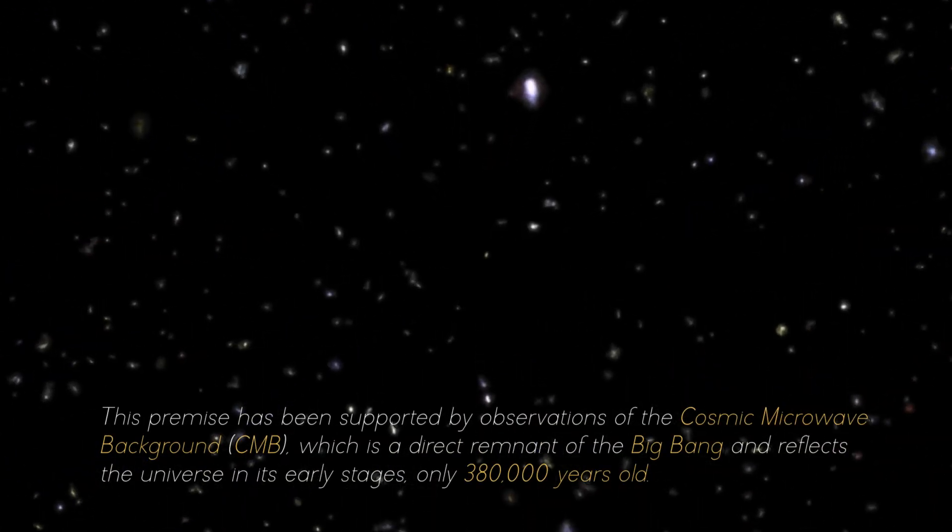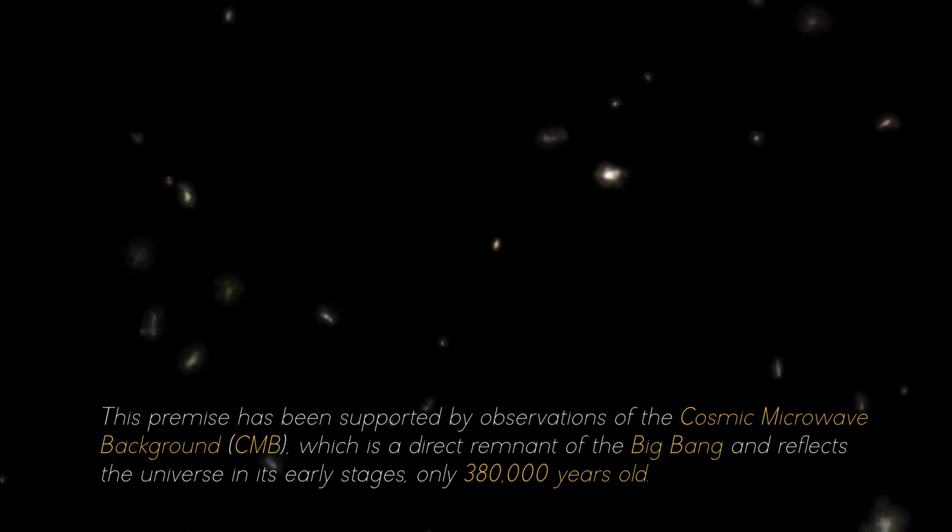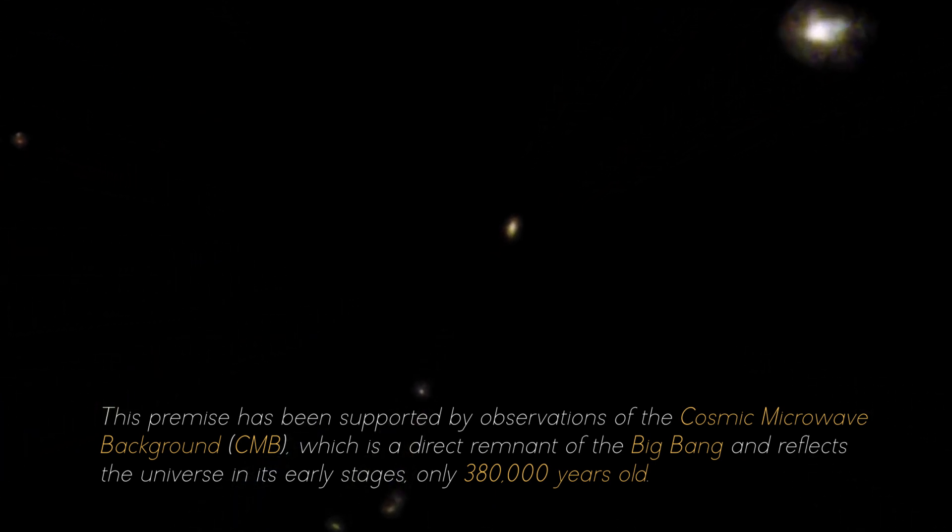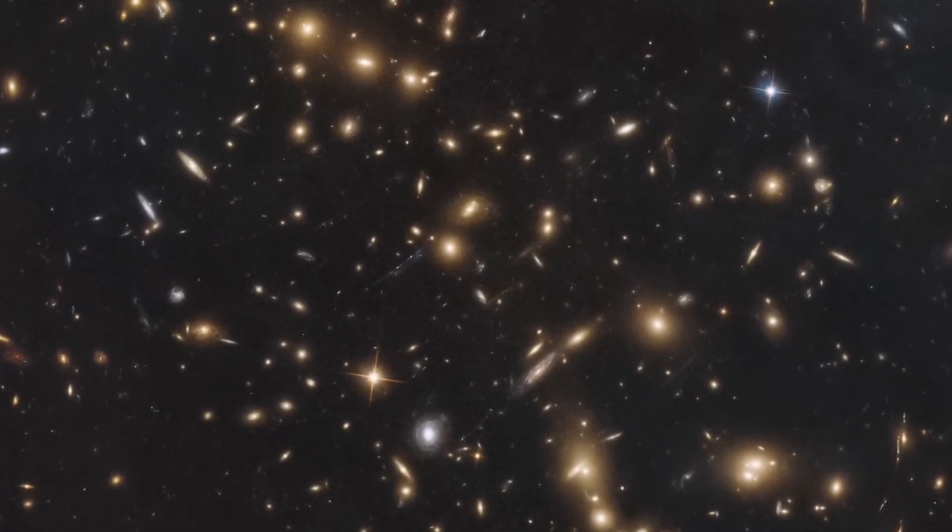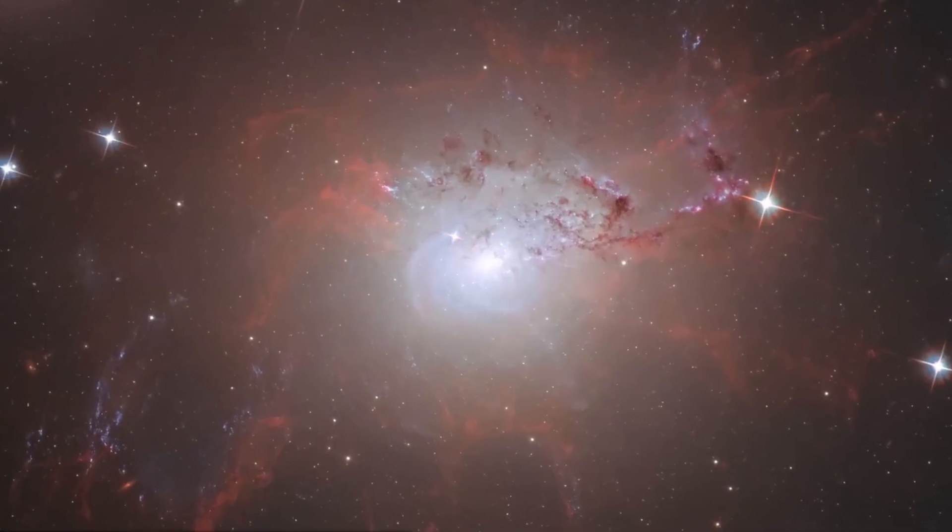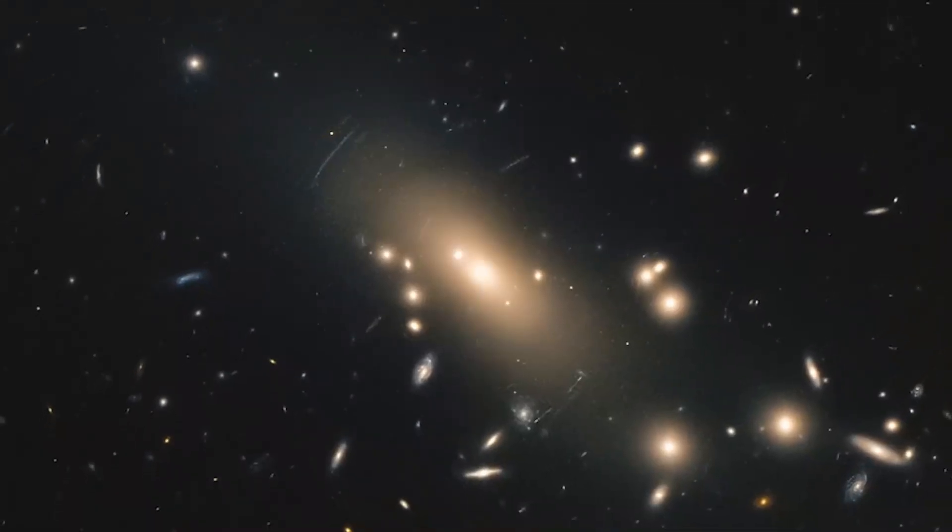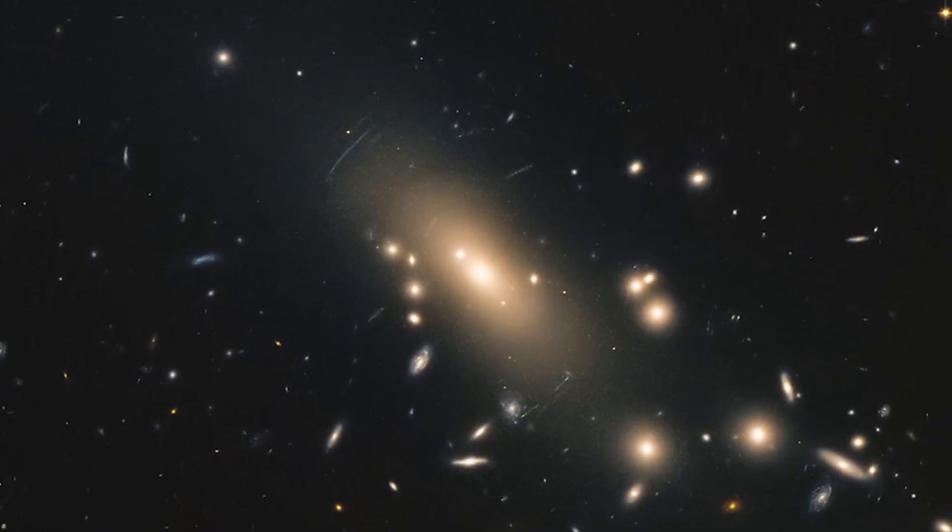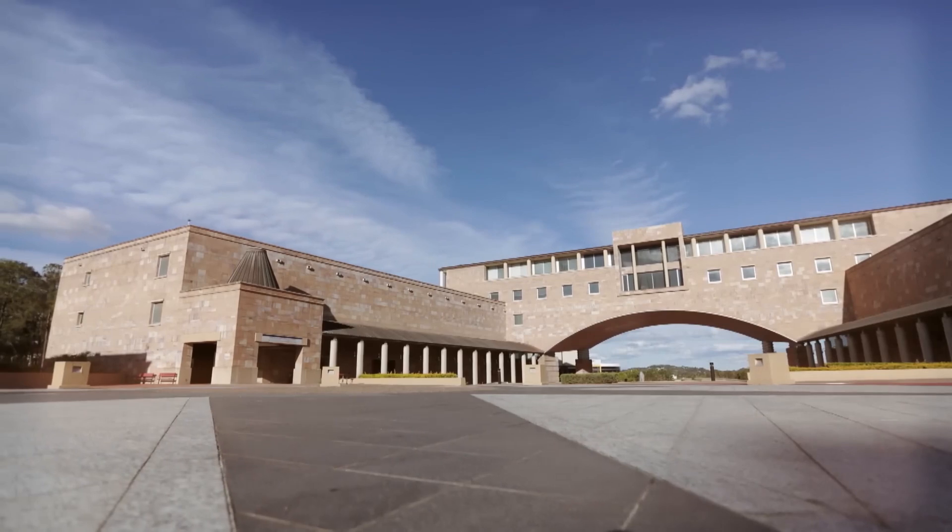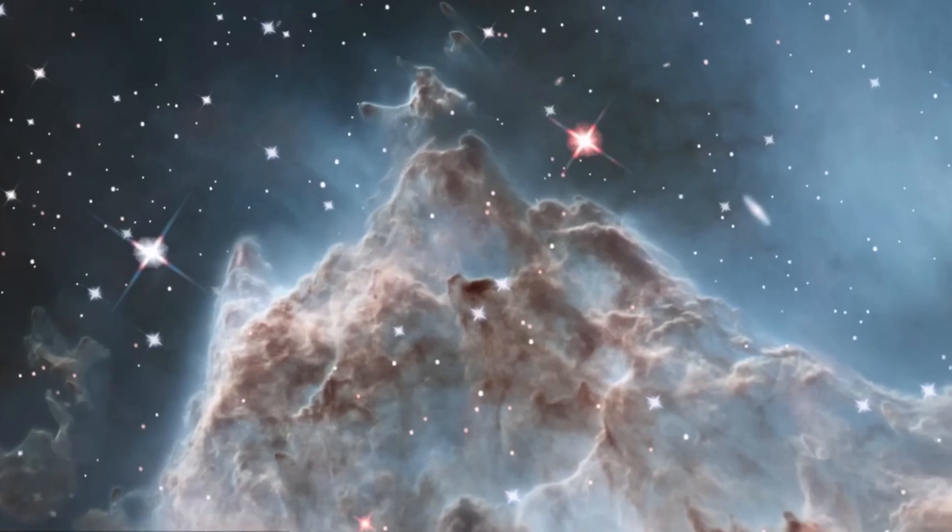This premise has been supported by observations of the Cosmic Microwave Background, which is a direct remnant of the Big Bang and reflects the universe in its early stages, only 380,000 years old. The uniform distribution of the CMB across the sky implies that the universe expanded rapidly and uniformly in all directions in those early times. However, in today's universe this could not be true. The researchers studied the behavior of more than 800 galaxy clusters in the present-day universe in collaboration with colleagues from the University of Bonn and Harvard University. If the isotropy hypothesis were correct, the clusters should have uniform properties across the sky.